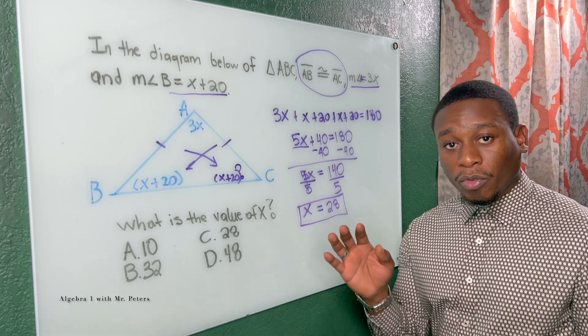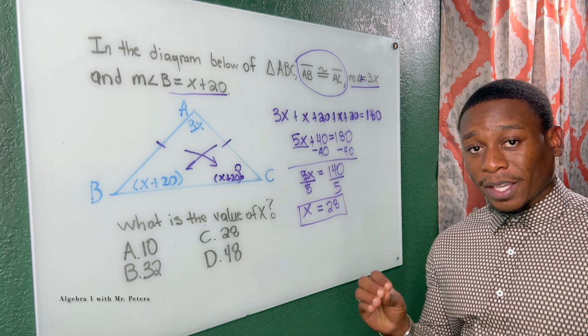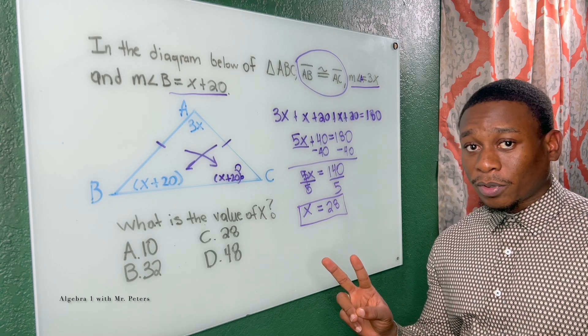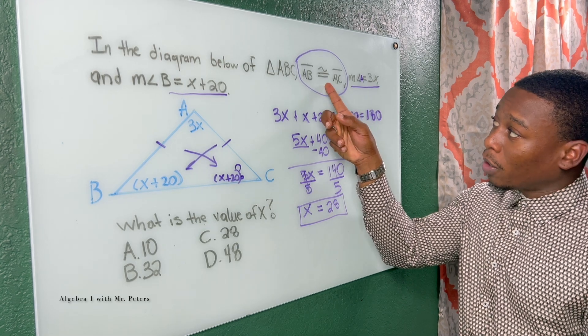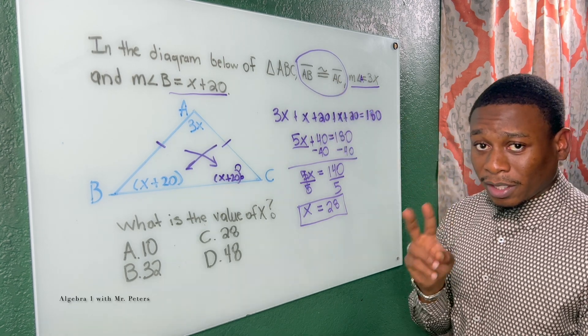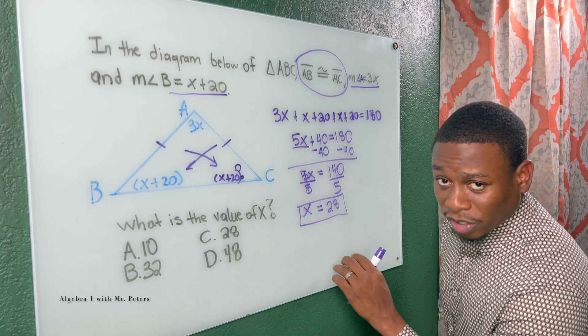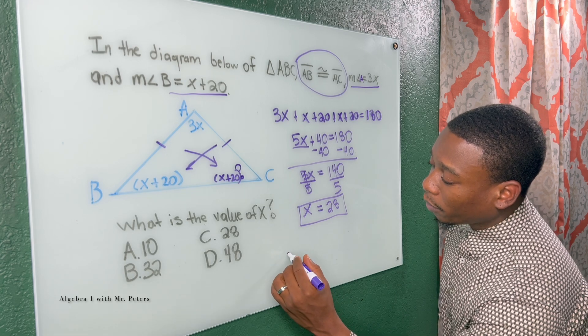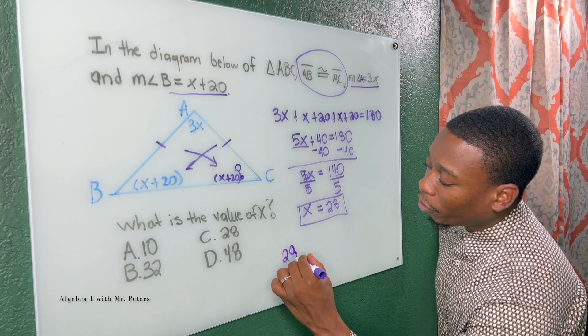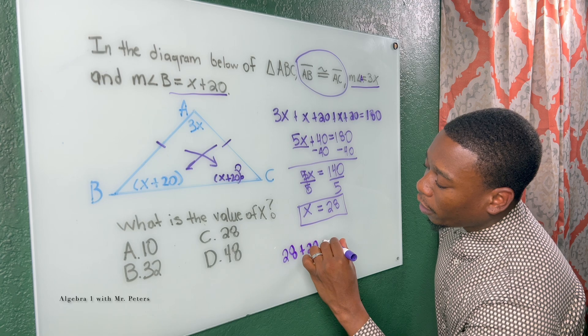Now the reason why students will sometimes get this wrong, this is the second tip. First tip was understanding what this statement said. The second tip now is understanding what are they asking us.